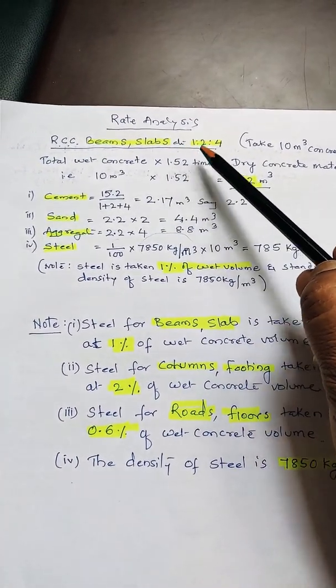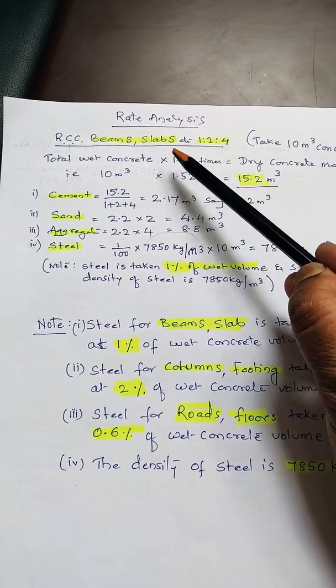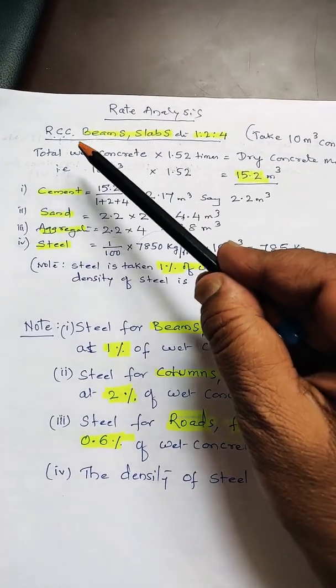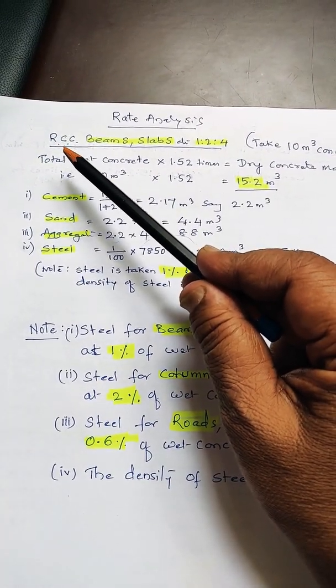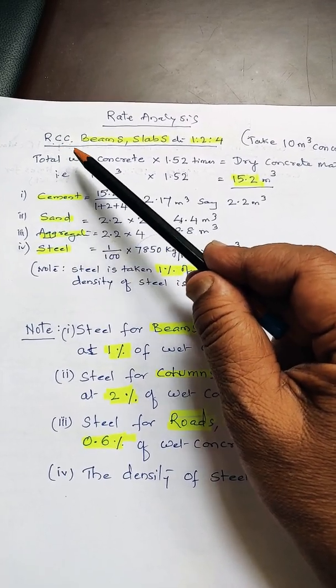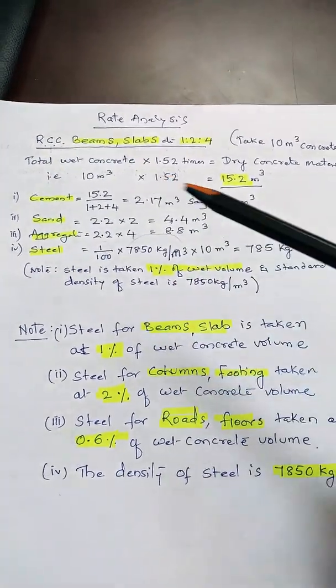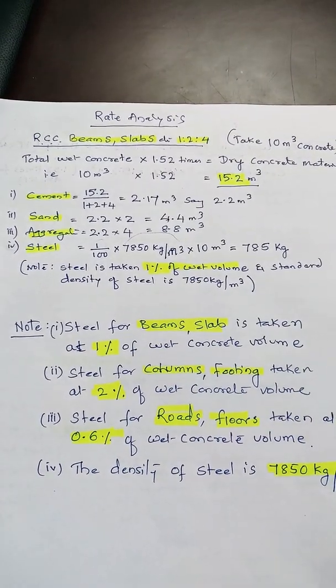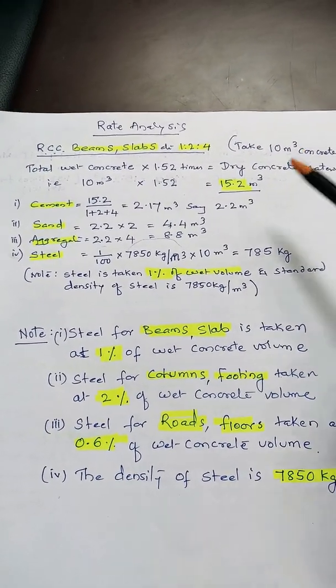We will use the ratio 1:2:4. Last time we studied plain concrete. Now we are going to study reinforced cement concrete, so we need to find steel also in the content of the concrete.